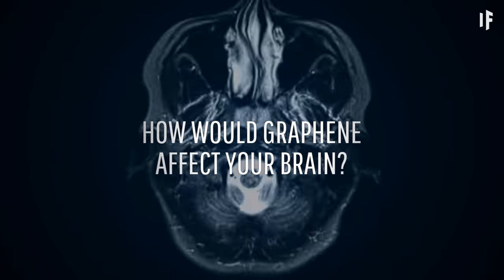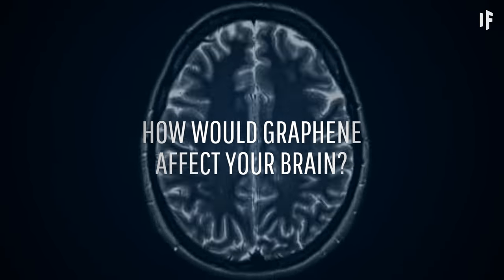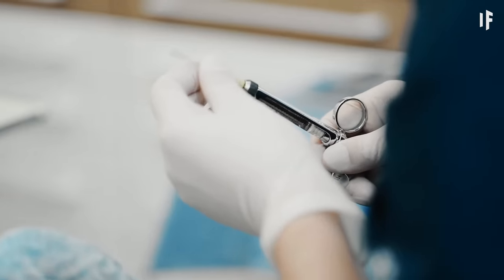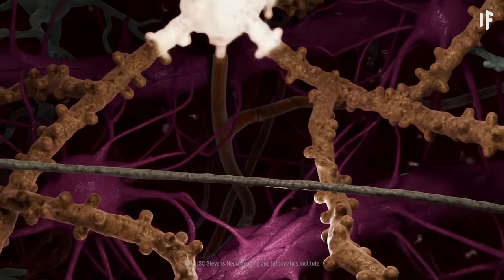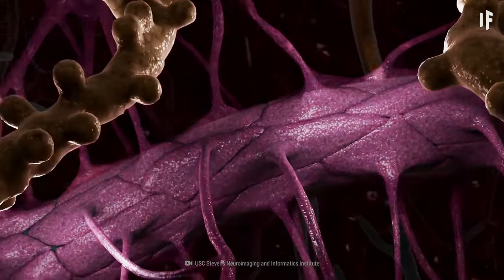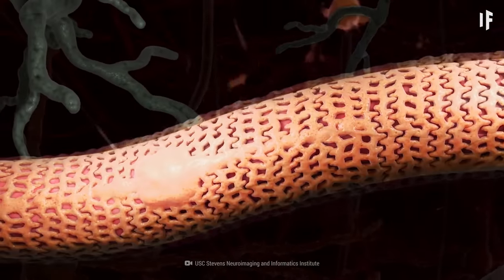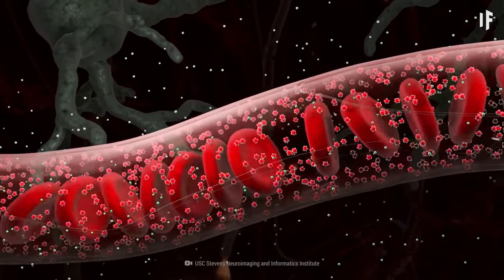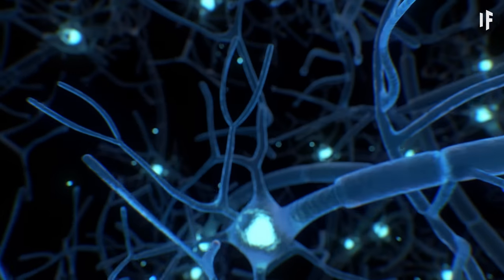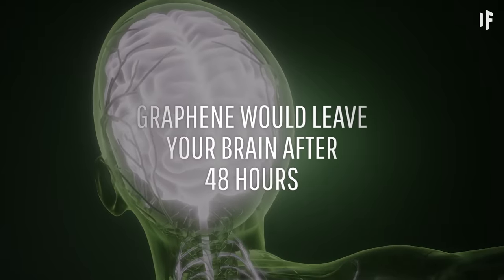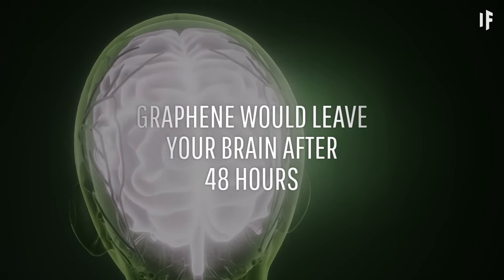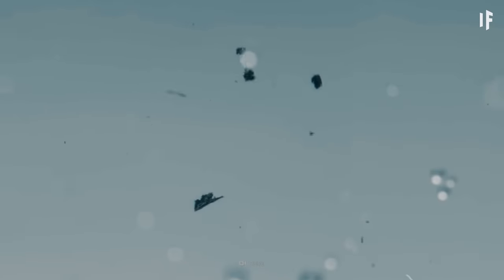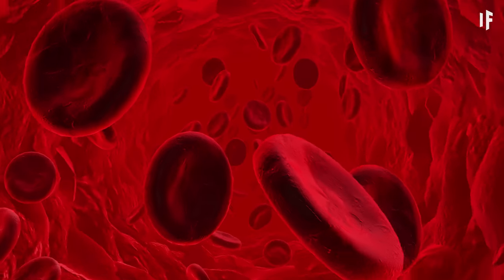But what would graphene do to your brain? Well, if you were injected with graphene, a small amount could cross the dreaded blood-brain barrier. This roadblock in your nervous system stops bacteria and viruses from getting into your brain. Now, if graphene enters your brain, most of the mineral would dissolve over the next two days. But you're not in the clear yet. The jagged graphene nanoparticles could pierce your blood cells and completely disrupt their function.